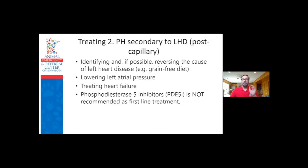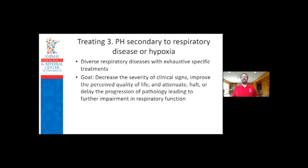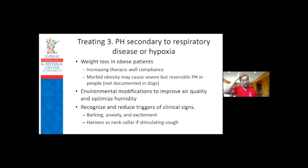Treating left heart disease and optimizing that therapy is really the first thing you want to do when treating pulmonary hypertension from severe left heart disease. For class 3 pulmonary hypertension from primary lung diseases, it's about figuring out what the lung disease is and treating it if possible. Sometimes that may even involve simple things like weight loss.